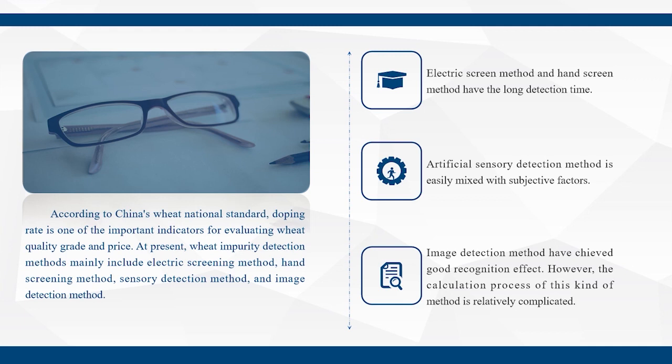At present, wheat impurity detection methods mainly include electric screening method, hand screening method, sensory detection method and image detection method.